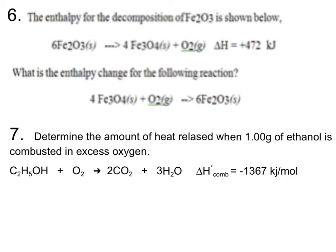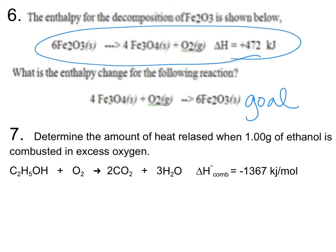In problem six, the enthalpy for the decomposition of iron three oxide is shown, and they want to know the enthalpy for the following reaction — this is a goal equation. If you look, that's strictly the reverse of the given equation. So this was endothermic going one way; it's going to be exothermic if you reverse the equation.